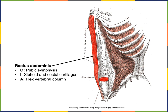The rectus abdominis has an origin at the pubic symphysis inferiorly, and its insertion is along the xiphoid process of the sternum and onto the costal cartilage. That orientation enables the rectus abdominis to flex the vertebral column, such as when you do a sit-up to tone your abdominal muscles — that motion of the sit-up is the action of flexing the vertebral column.